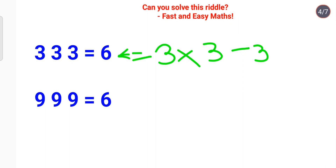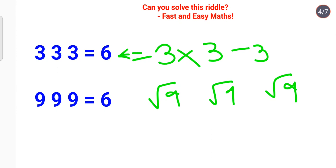Similarly for 9, 9, 9: note that the square root of 9 gives 3. So we write square root of 9, square root of 9, square root of 9, giving us 3, 3, 3. Then 3 times 3 minus 3 again gives the value as 6. I hope you are all getting the hang of how to use mathematical operations to solve these riddles.